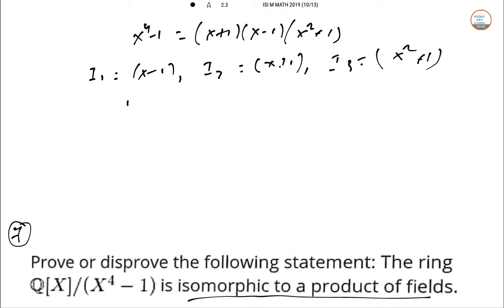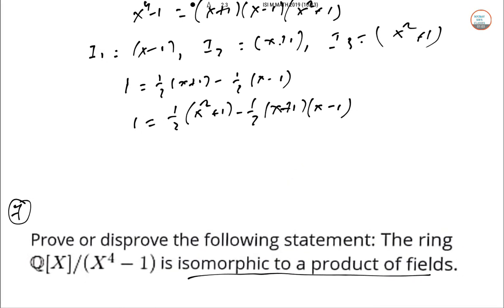So the relations: 1 = ½(X+1) - ½(X-1), and 1 = ½(X²+1) - ½(X+1)(X-1). This implies that the ideals I₁, I₂, I₃ are pairwise coprime.